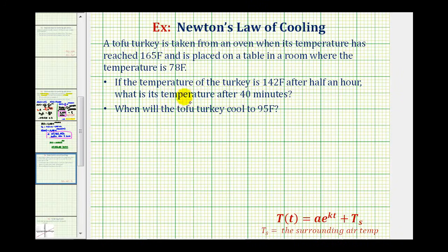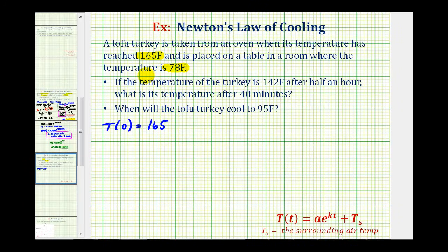Let's take a look at our question. A tofu turkey is taken from an oven when its temperature has reached 165 degrees and is placed on a table where the temperature is 78 degrees Fahrenheit. So if the turkey is taken out of the oven when it reaches 165 degrees, that means T of zero must equal 165 degrees. Since the surrounding air temperature is 78 degrees, we know that T sub s is equal to 78.